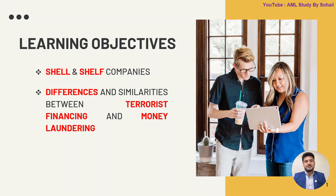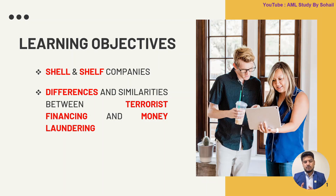Welcome back to AMS Study by Sohail. Today our learning objectives are shell companies and shelf companies, and the difference between them. Our second objective is the difference and similarity between terrorist financing and money laundering. We will explain in detail what is meant by shell companies, and hopefully by the end of the session you will be able to differentiate between these two things.